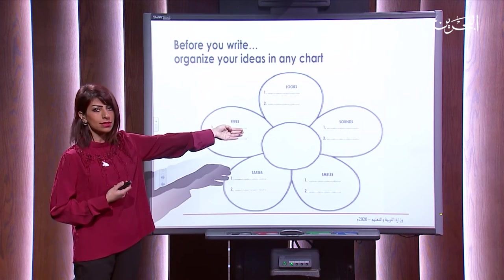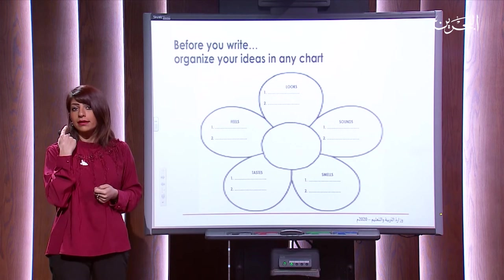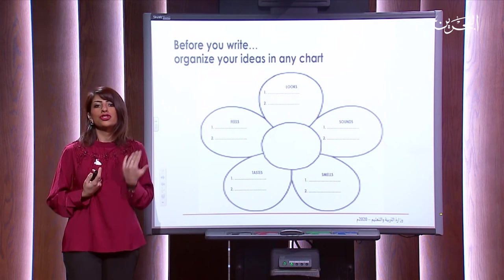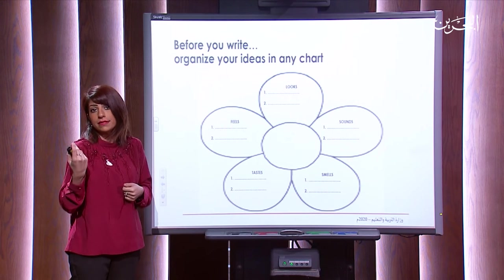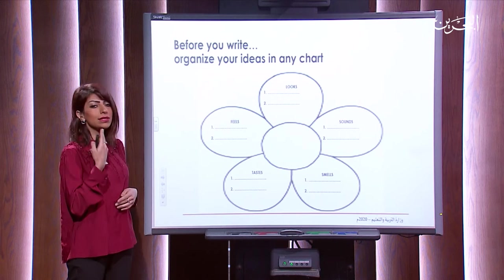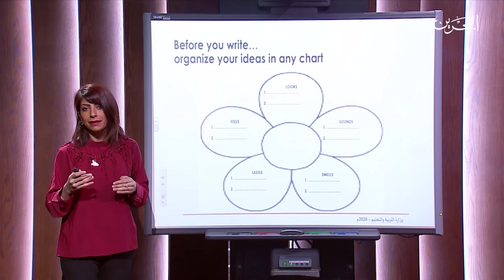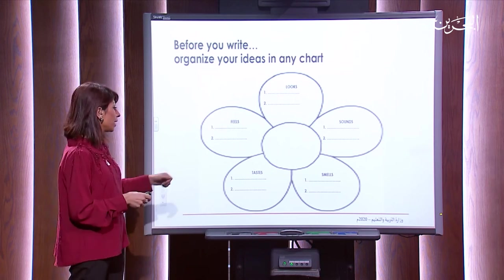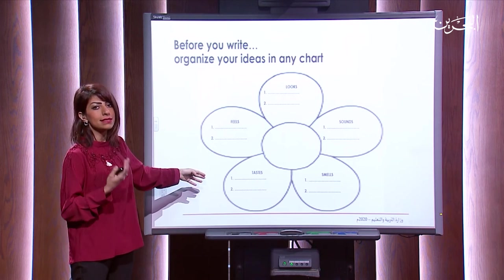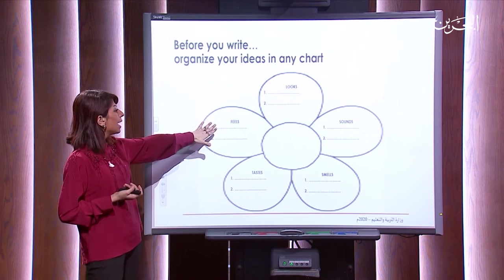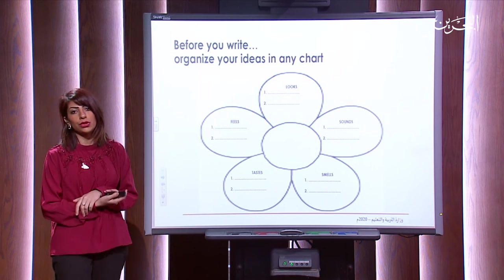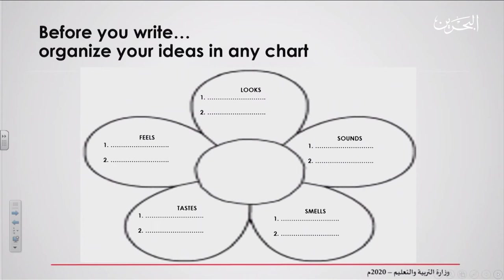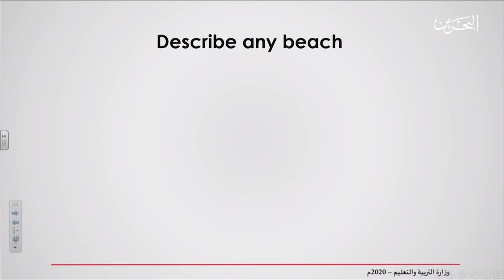Then move to sounds — write two things you can hear at Bahrain Museum, for example, old traditional music or the waves from the sea. Then smells — two things you could smell at the place. Then taste — if there is food, mention at least two points. Last but not least, feels — two things that made you feel something. Organize your ideas in this chart and then describe.